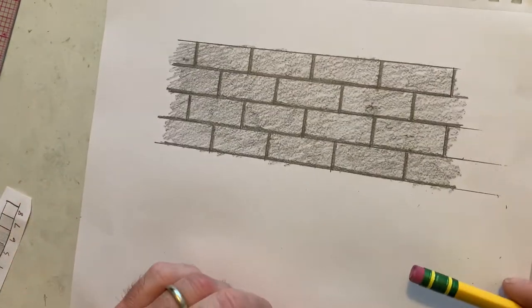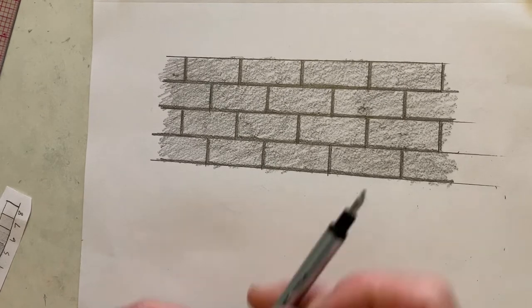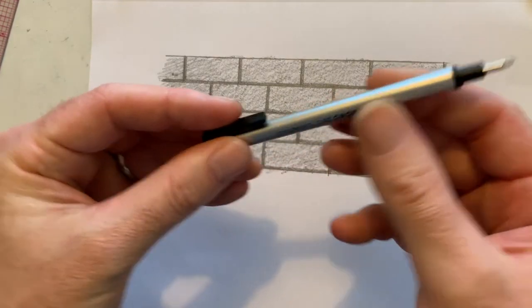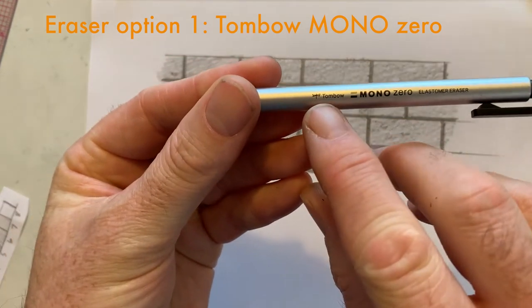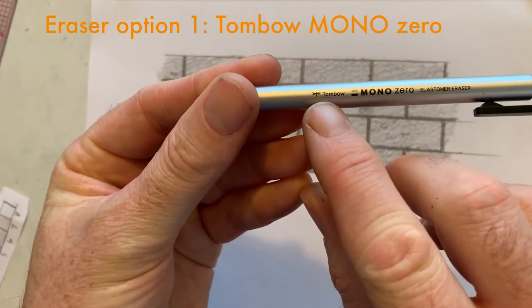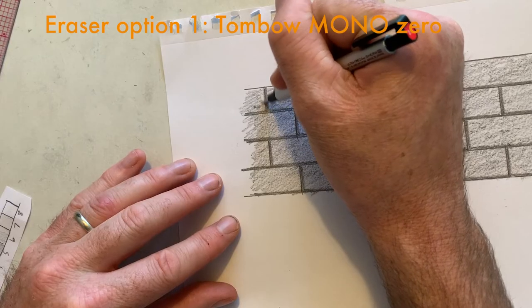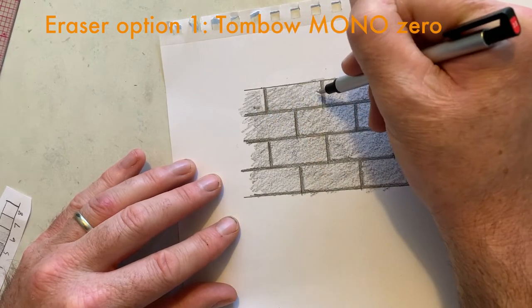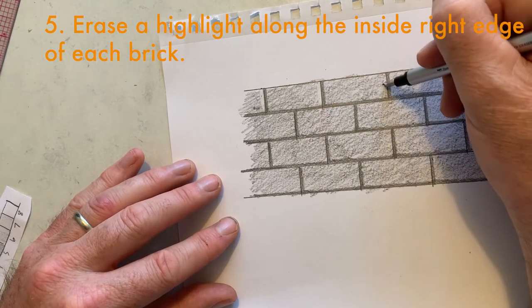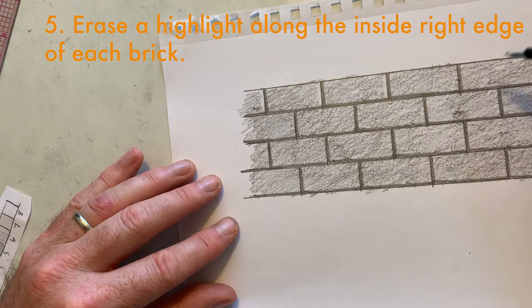For the highlights, you'll need to erase, and I'll show you 3 different eraser options that could work for you. I'm going to start with this Tombow eraser, which I absolutely love. They're only like 4 bucks. But what I'm going to do is use this eraser, and I'll show you some more erasers later. And I'm highlighting the inside right edge of each brick.